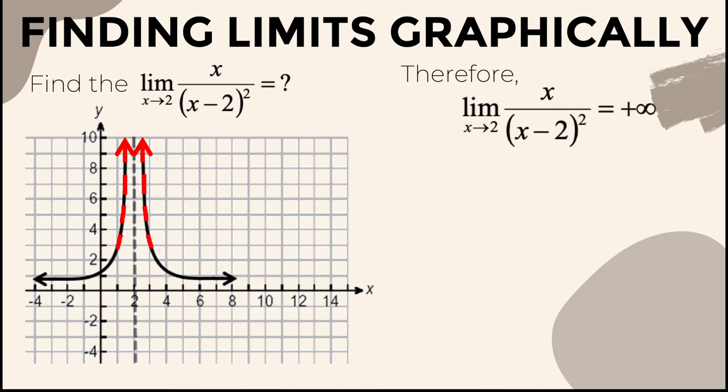But wait, you might be wondering why the limit is positive infinity and not DNE or does not exist. Well, technically speaking, if the limit is infinity, it follows that it does not exist. So why not write DNE instead of positive infinity? It is because the limit from the left and from the right happens to be the same, which is both positive infinity. So it is better to write positive infinity to indicate that the function is increasing without bounds positively from either side.